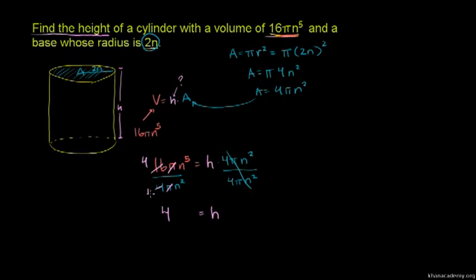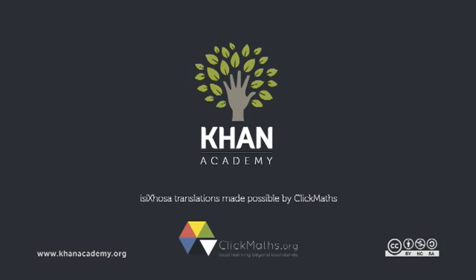When we divide 16 by 4, we get 4. For the exponents, n to the power five divided by n squared gives us n to the power three.